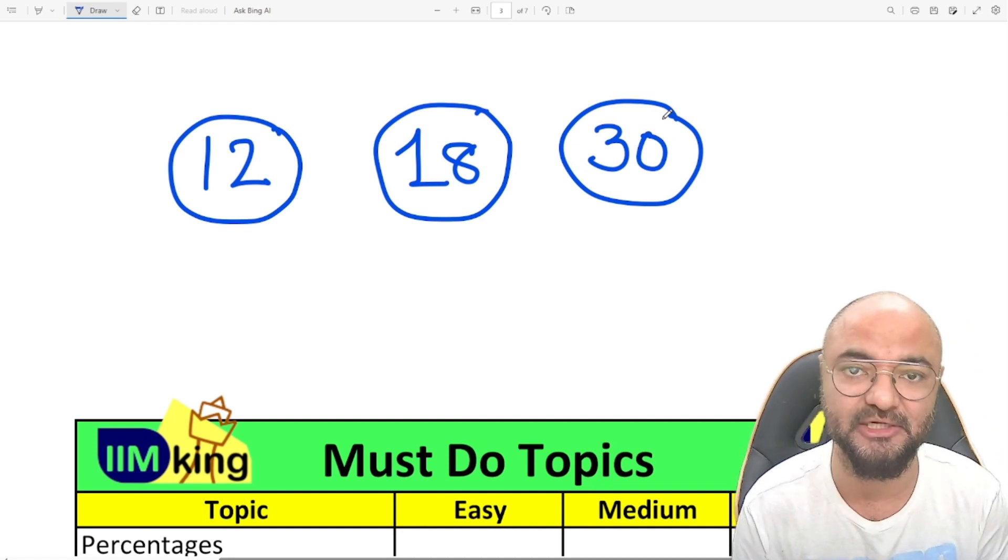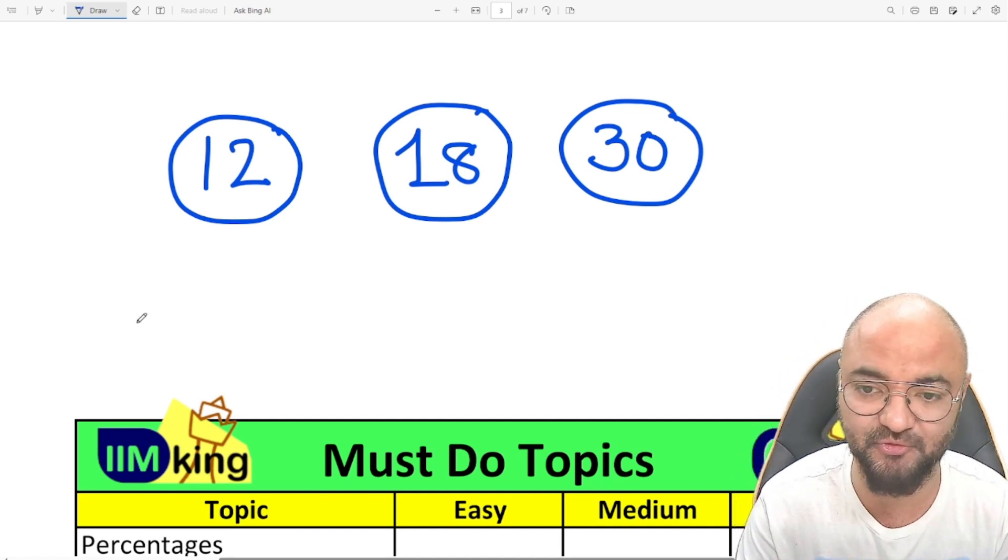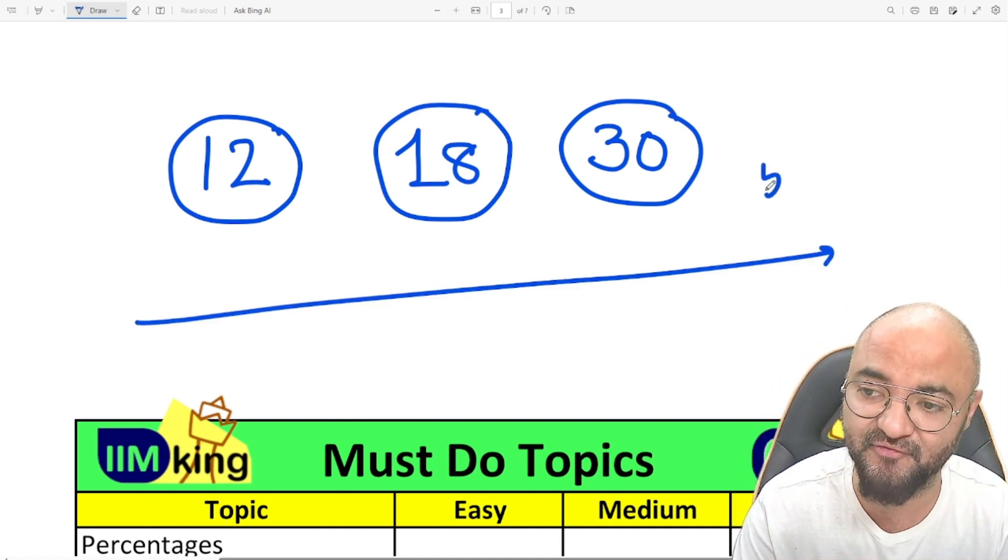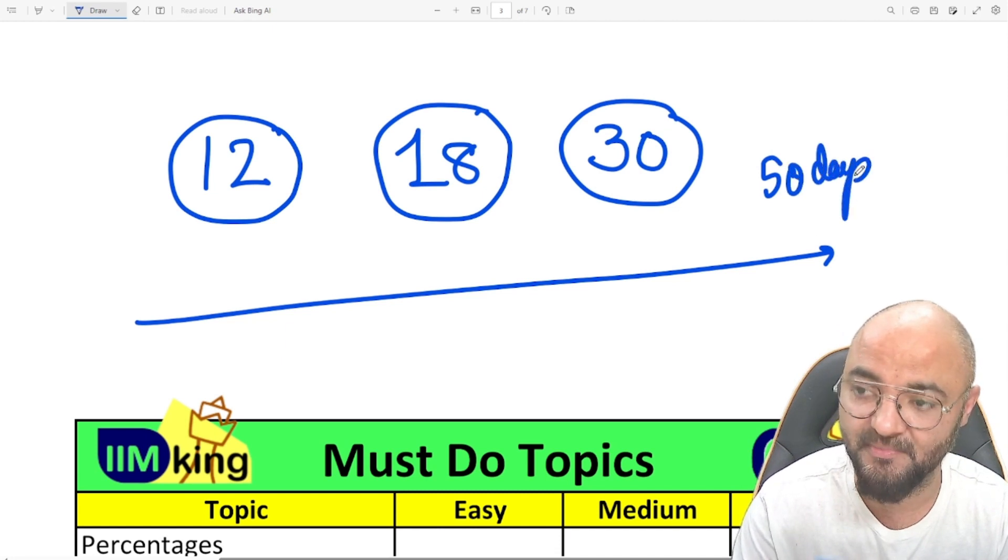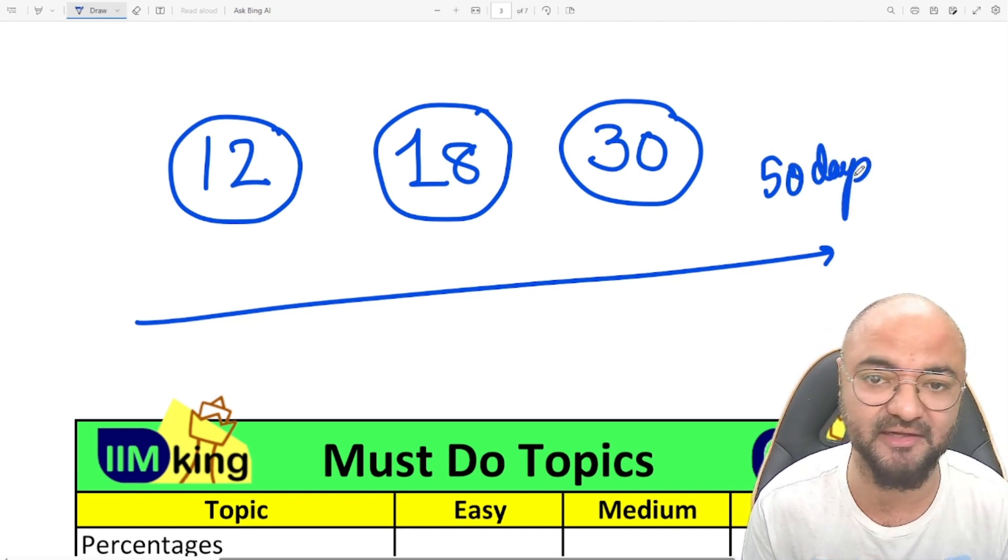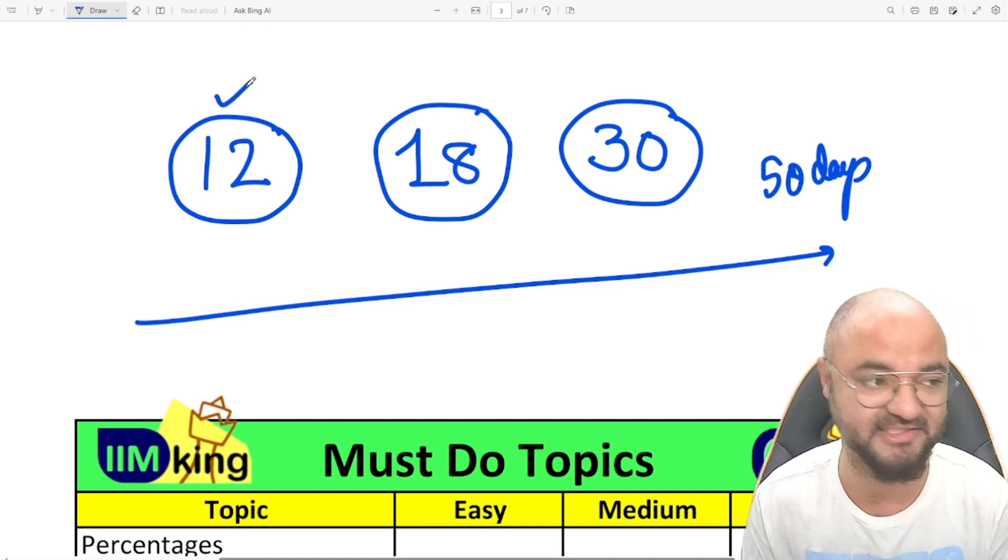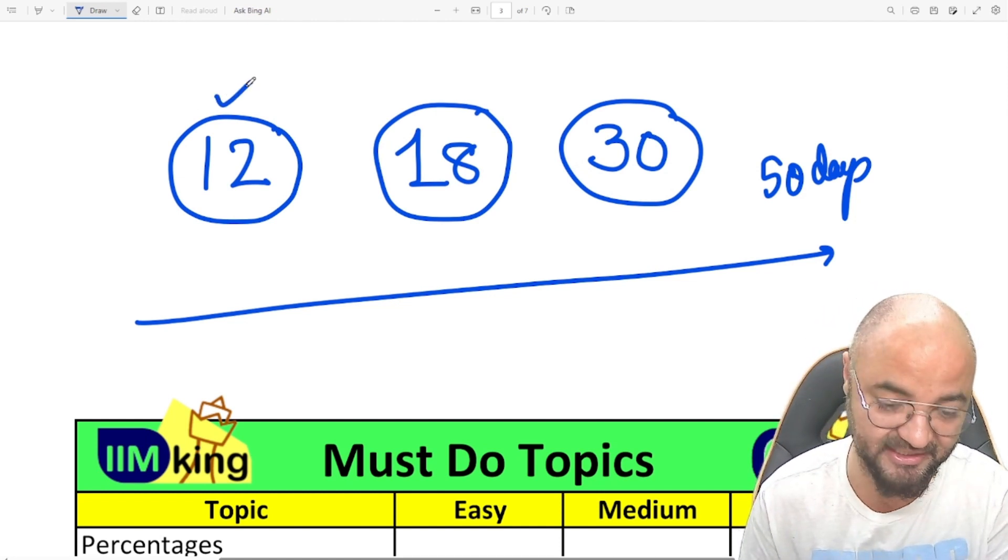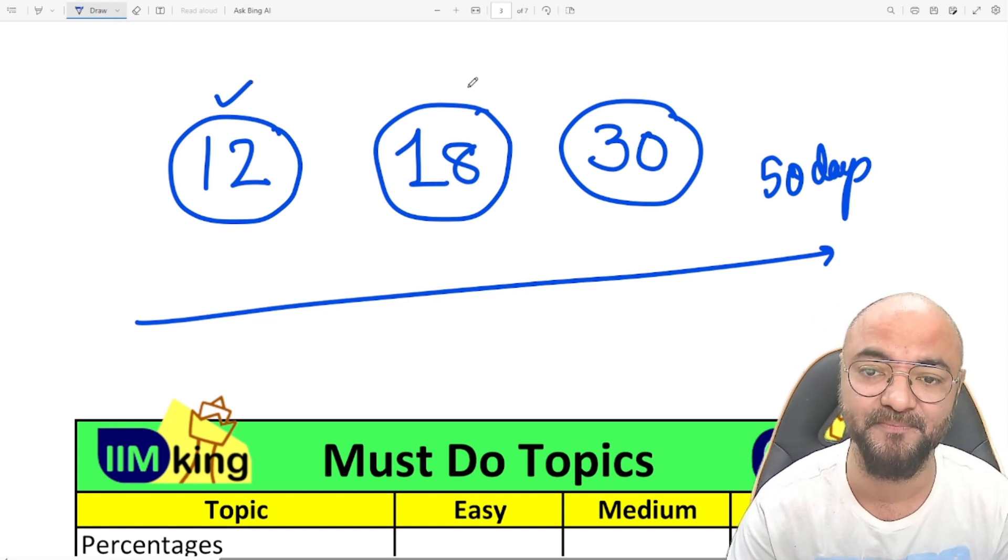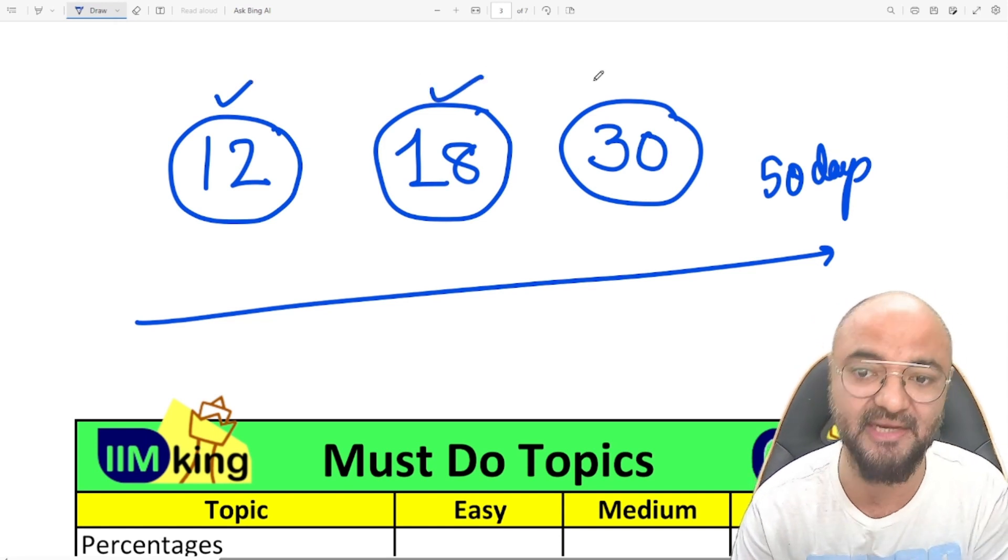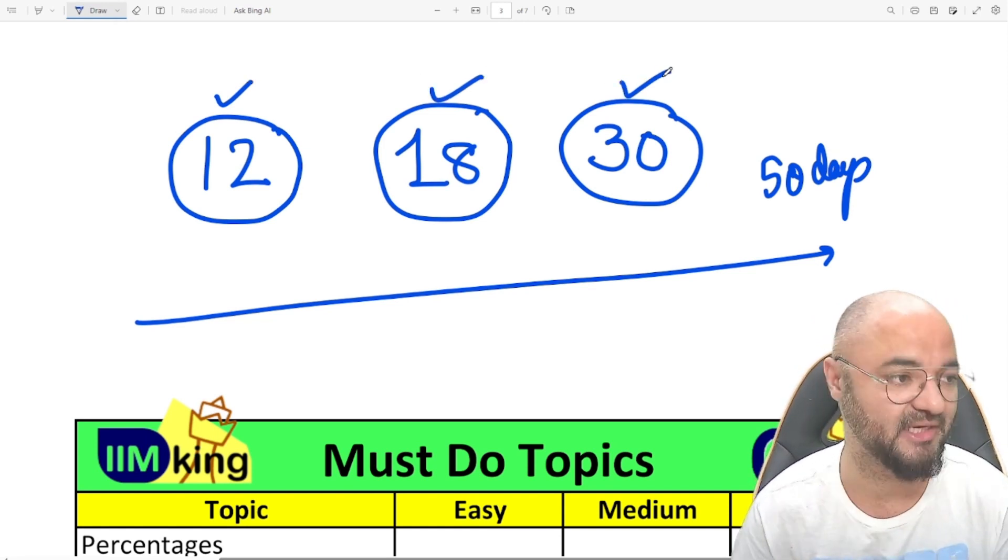Yeah, so I have three numbers: 12, 18, and 30, which I want to target in the next 50 days. My simple agenda is that I have to cross the cutoff. So at 12, the moment I'm crossing 12 marks, I'm building the confidence that yes, now I am at the gates of IIM. Then I'll move the target to 18, and then the next target is 30.